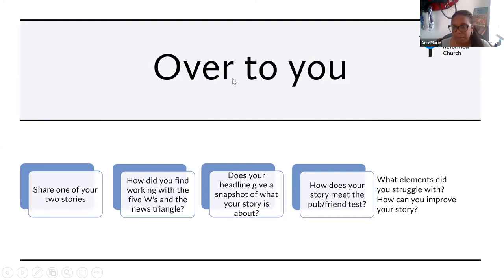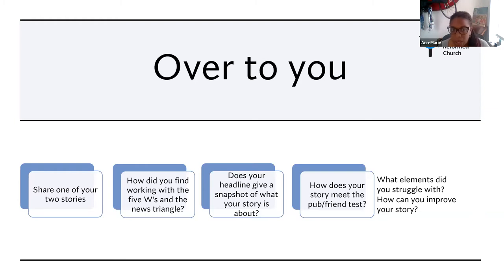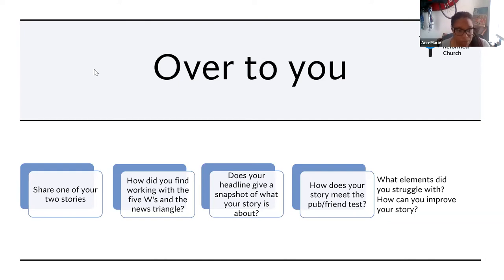So what we're going to do now is break up into groups. Last time we asked you to write two stories and bring them along today. We're going to go into some breakout rooms and look at one of your two stories. We're going to show how you found working with the five W's and the news triangle, if your headline gives a snapshot of what your story is about, if it meets the pub friend test, or just discuss what elements you struggle with. If you haven't written a story, don't worry — you can go on the BBC website, look up a story and see if you can pick out the five W's. We're going to do that for about 10 minutes.